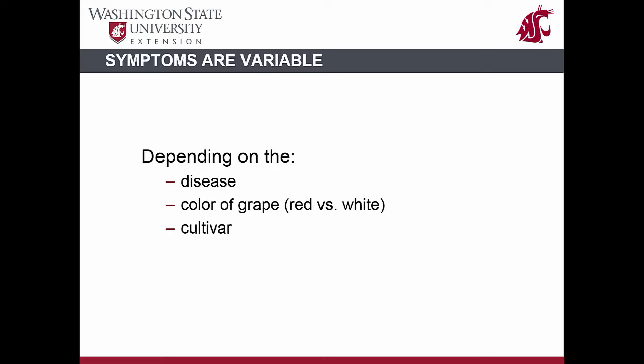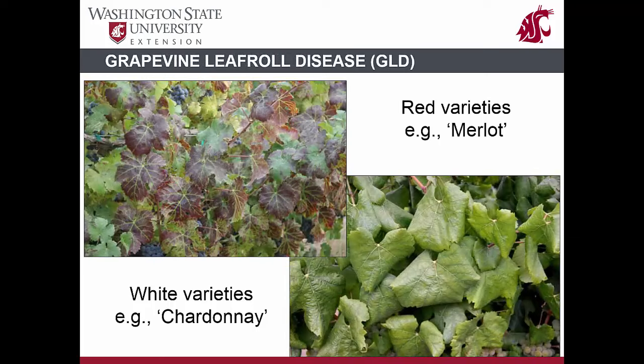Each virus disease is morphologically distinct and presents different characteristic symptoms in the grapevine. However, symptoms of a disease are variable depending on the cultivar — for example, red and white-fruited grape cultivars show distinct differences in symptoms. Grapevine leaf roll disease shows contrasting symptoms in red and white-fruited cultivars. In red-fruited cultivars such as Merlot, mature leaves at the bottom portions of canes show symptoms consisting of green veins and reddish or reddish-purple interveinal areas.